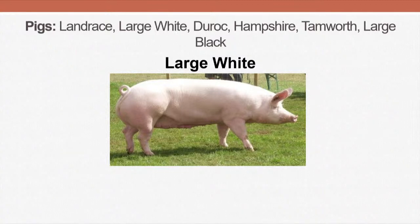The final breeds we want to look at today are the breeds of pigs. We have many breeds in our region, but mostly we have the Landrace, Large White, Duroc, and Hampshire. What you are seeing is the Large White. We were able to identify the breeds based on their coat color and name them for the different classes of animals.